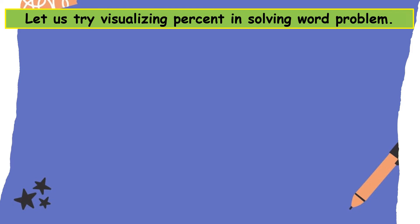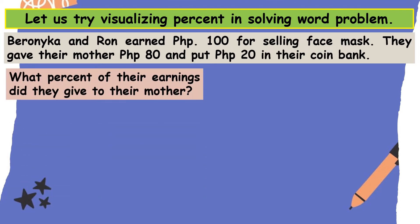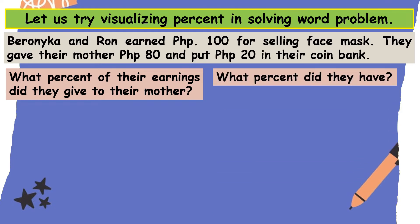Let's try visualizing percent in solving a word problem. Veronica and Ron earned 100 pesos for selling facemasks. They gave their mother 80 pesos and put 20 pesos in their coin bank. What percent of their earnings did they give to their mother? What percent did they keep?